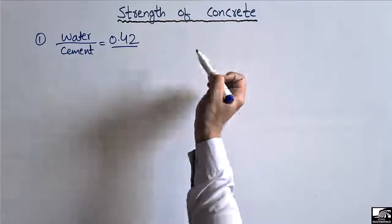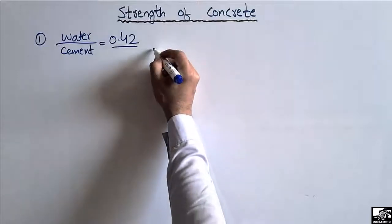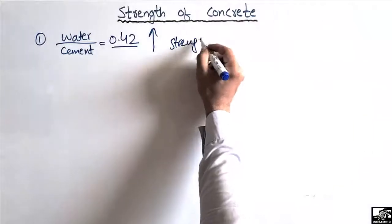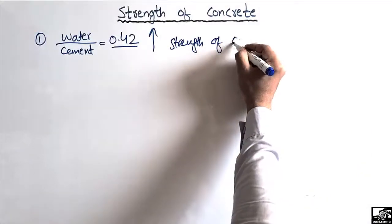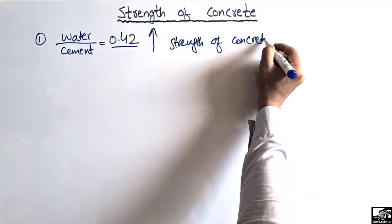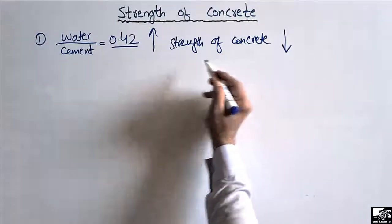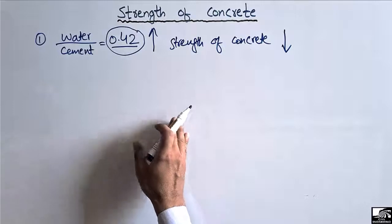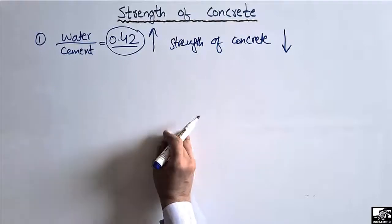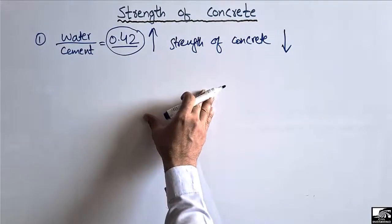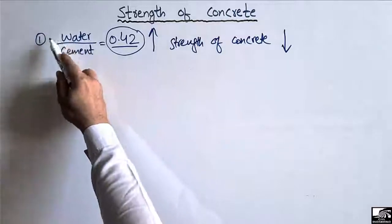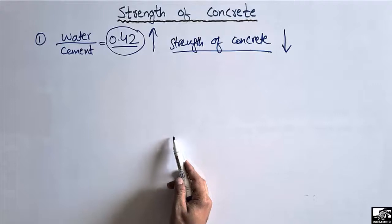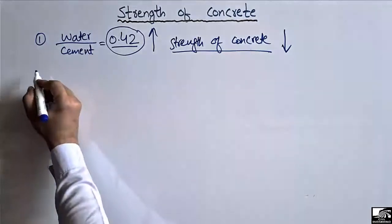The water-to-cement ratio is inversely proportional to the strength of the concrete. If you increase the water-to-cement ratio after 0.42, the strength of the concrete will decrease. We use this optimum water-to-cement ratio in order to achieve higher hydration and higher strength of the concrete. Water-to-cement ratio has a great effect on the strength of concrete.